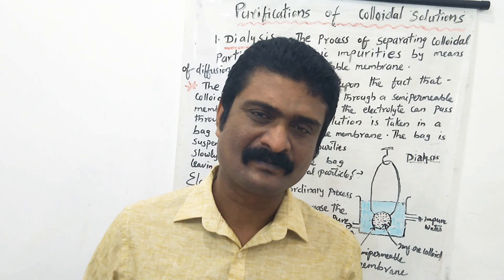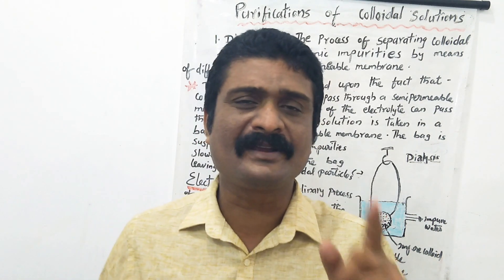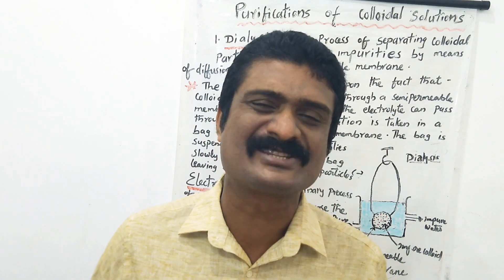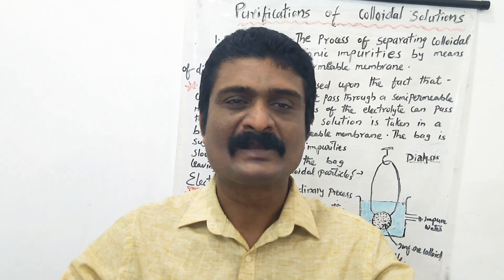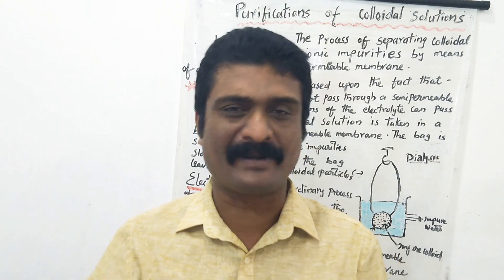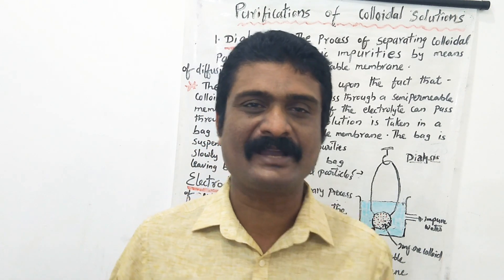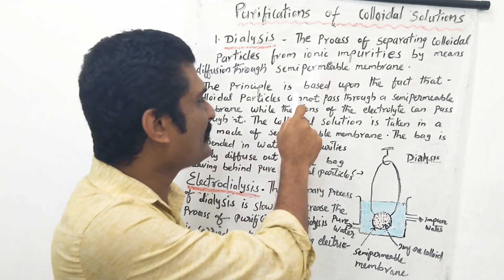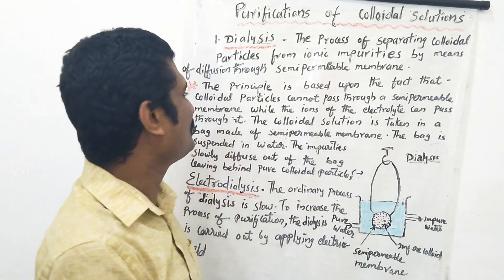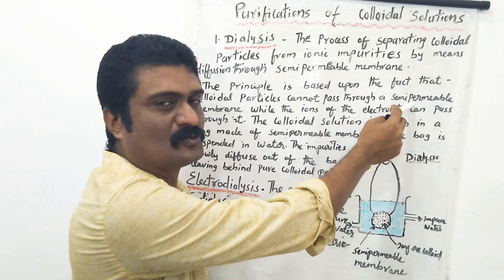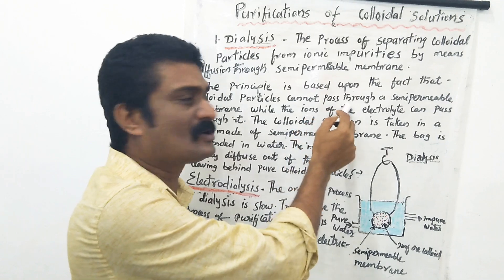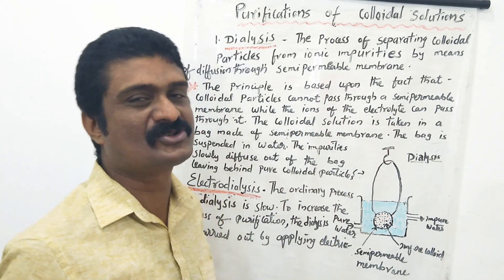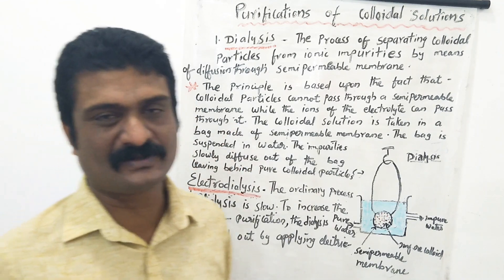What is the principle behind dialysis? The principle of dialysis is that colloidal particles cannot pass through a semi-permeable membrane, but ionic impurities can pass through a semi-permeable membrane. The principle is based upon the fact that colloidal particles cannot pass through a semi-permeable membrane while the ions of the electrolyte can pass through it.